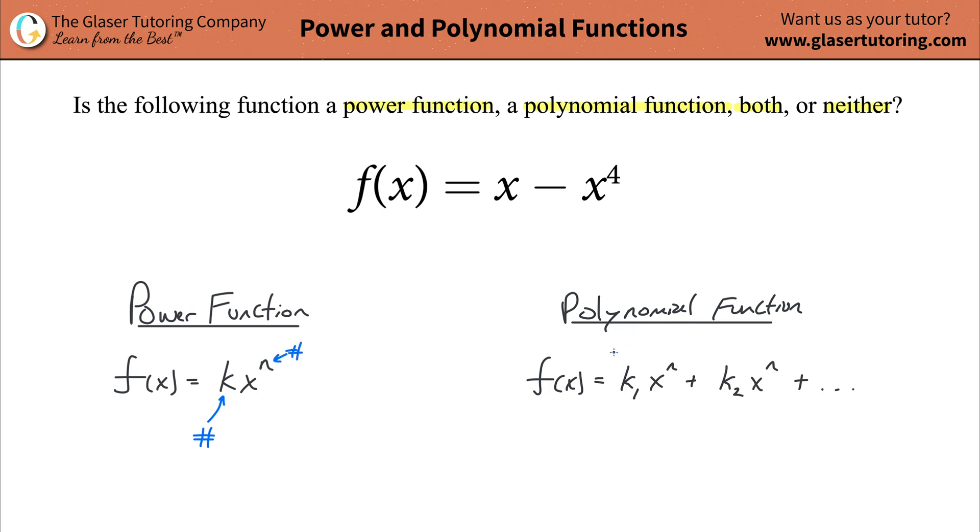Similarly, a polynomial function now is basically the same thing as a power function, except it can have multiple terms. So that's kind of the best way to do it. I like to use Ks in here, K sub one, K sub two, but you might find they might use As or something. What I'm trying to do is try to show you the similarities between the polynomial and the power, but also yet the differences as well.